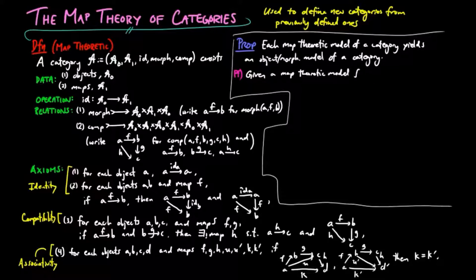Given a map theoretic model A, define objects F(A)_0 to be the objects of A, and morphisms F(A)_1 to be those triples (A, F, B) of object-map-object such that F is a morphism from A to B.